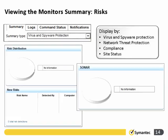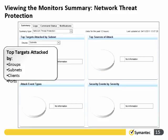Viewing the Monitor Summary in the risks tab, we can see the risk distribution, new risks, and SONAR information. Under the network threat protection area, we can look at information on top targets attacked by groups, subnets, clients, or ports.